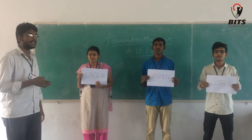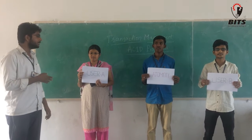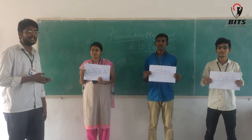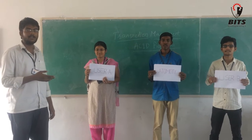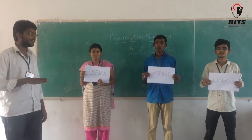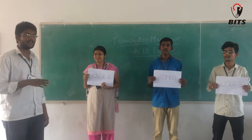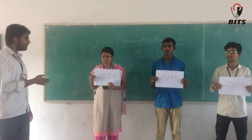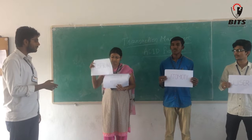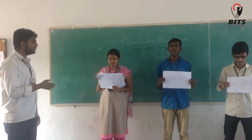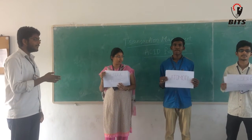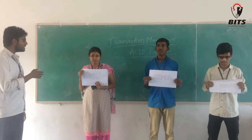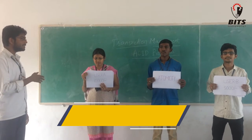Coming to Atomicity, both the users — either the transaction should be complete or must all be completed, we say either all or none. User A is having 10,000 rupees and User B is having 5,000 rupees. When we come to Atomicity, User A wants to give 2,000 rupees to User B.